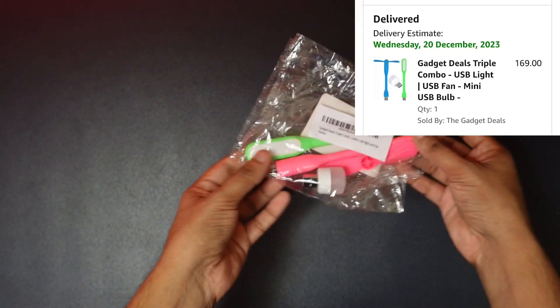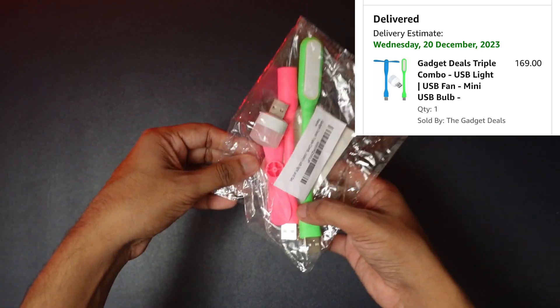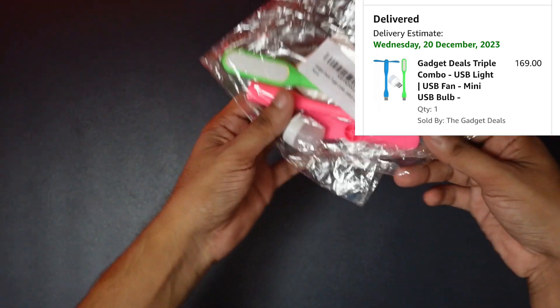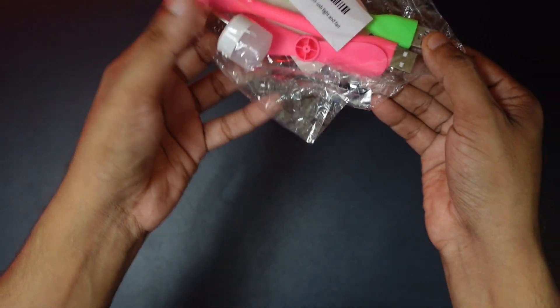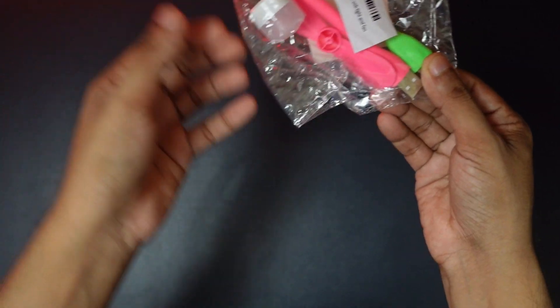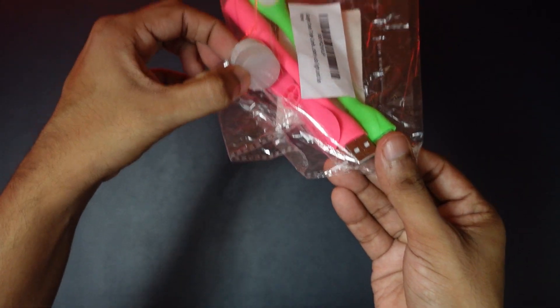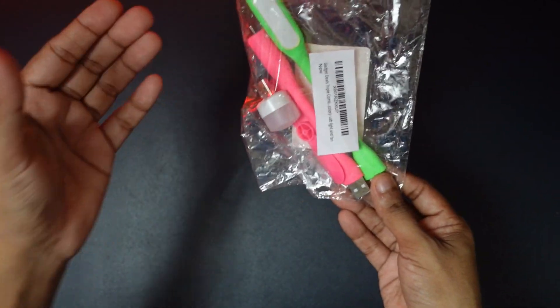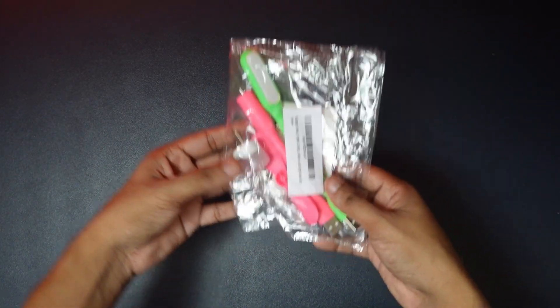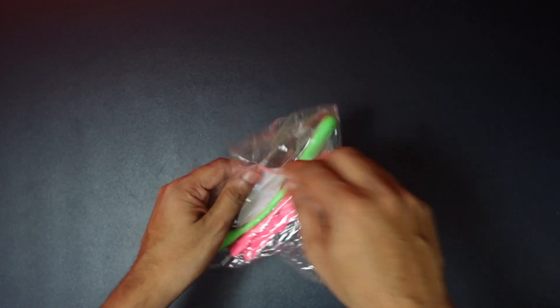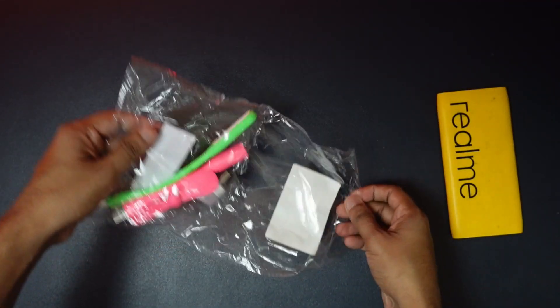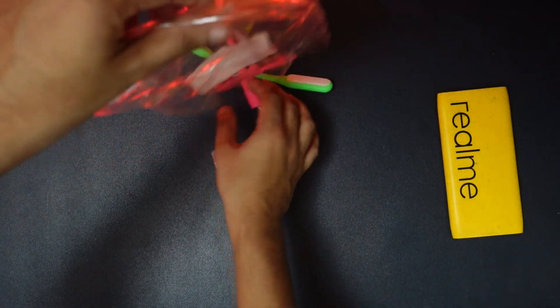Next one is gadgets. We have a combo pack. We have USB fan, USB light, flexible mount, and USB power. Then we unbox the device. I will open the door and we will talk about it.